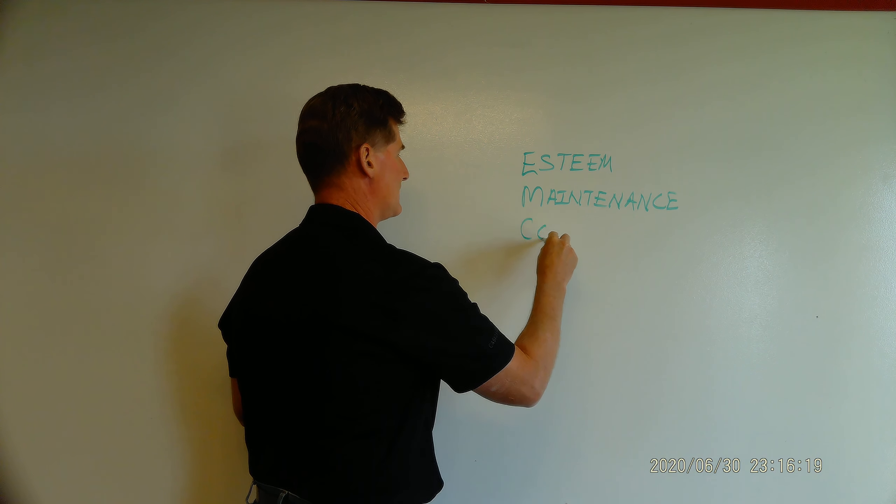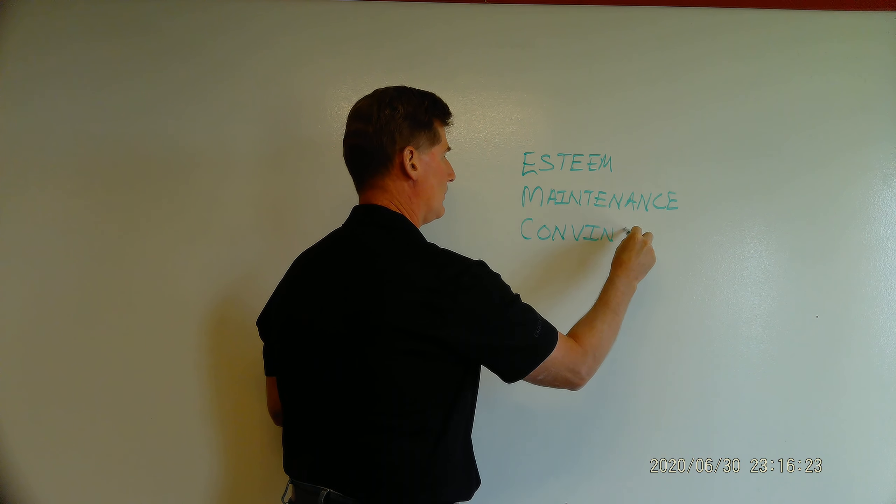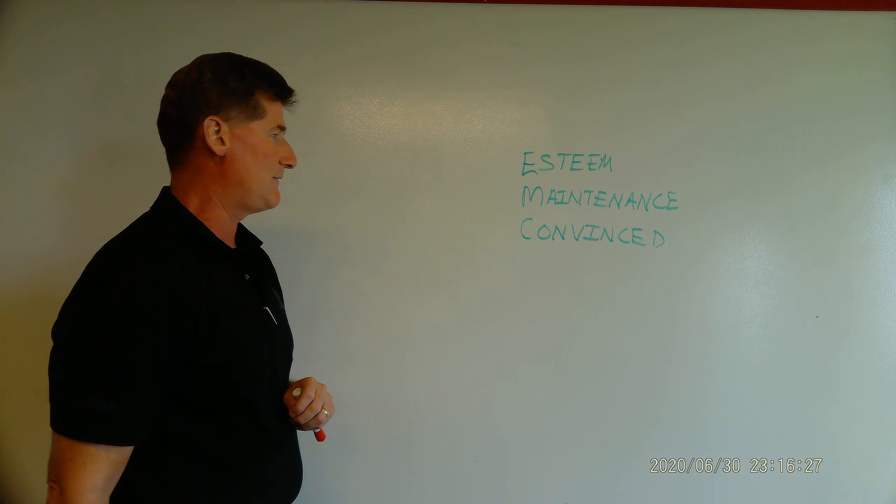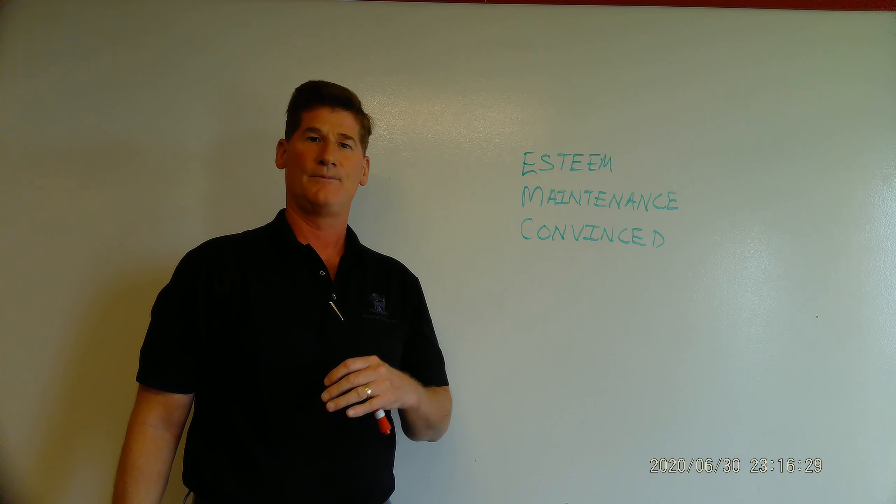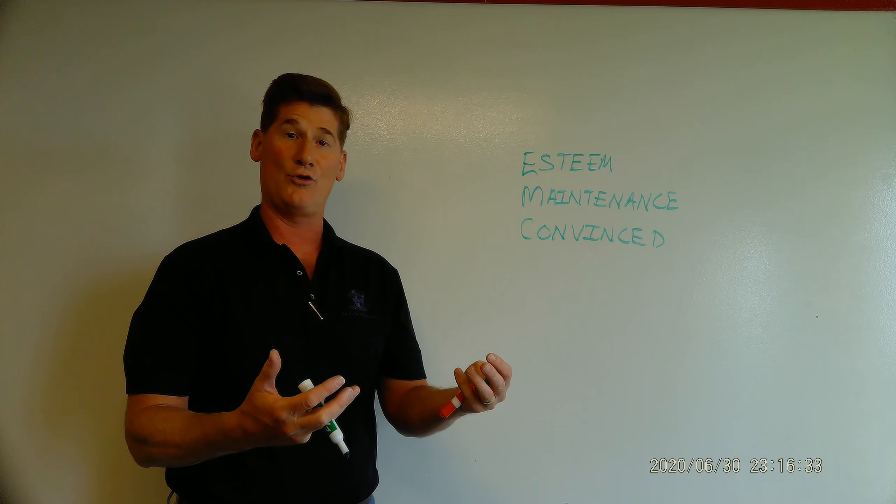Next one is the word convinced. Notice that when I write it there's an E there. Back then in old spelling the E wasn't there; they put an apostrophe. Convinced means to argue and to make people believe in your reasoning, your argument, or your evidence.